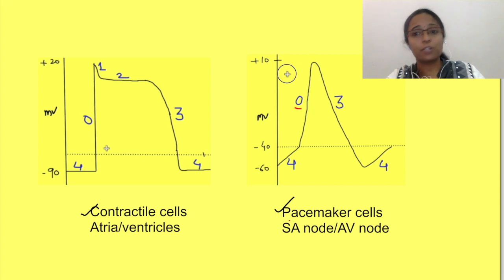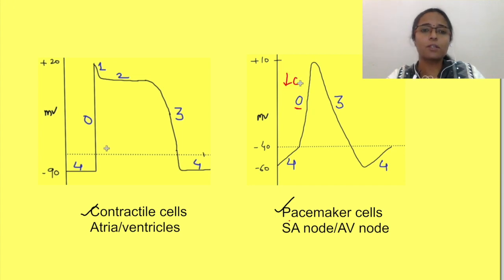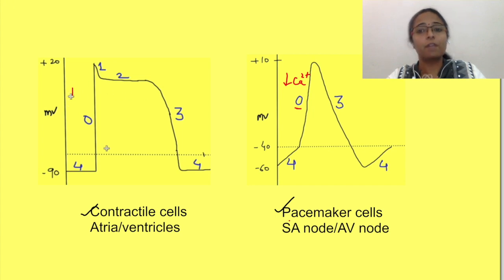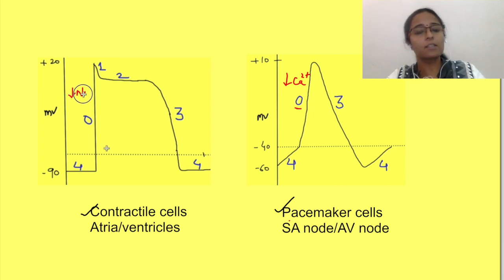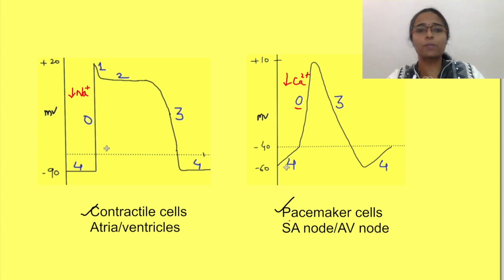Phase 0 of the action potential of pacemaker cells is caused by entry of calcium due to opening of calcium channels, while phase 0 of contractile cells is caused by entry of sodium due to opening of sodium channels.